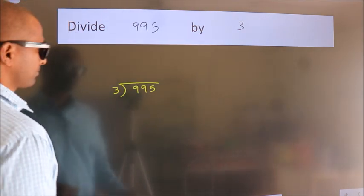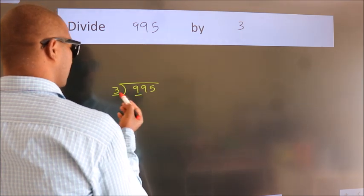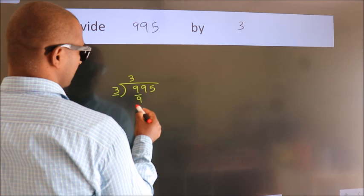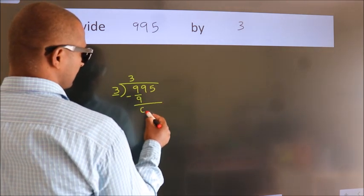Next. Here we have 9, here 3. When do we get 9 in 3 table? 3 threes, 9. Now, we should subtract. We get 0.